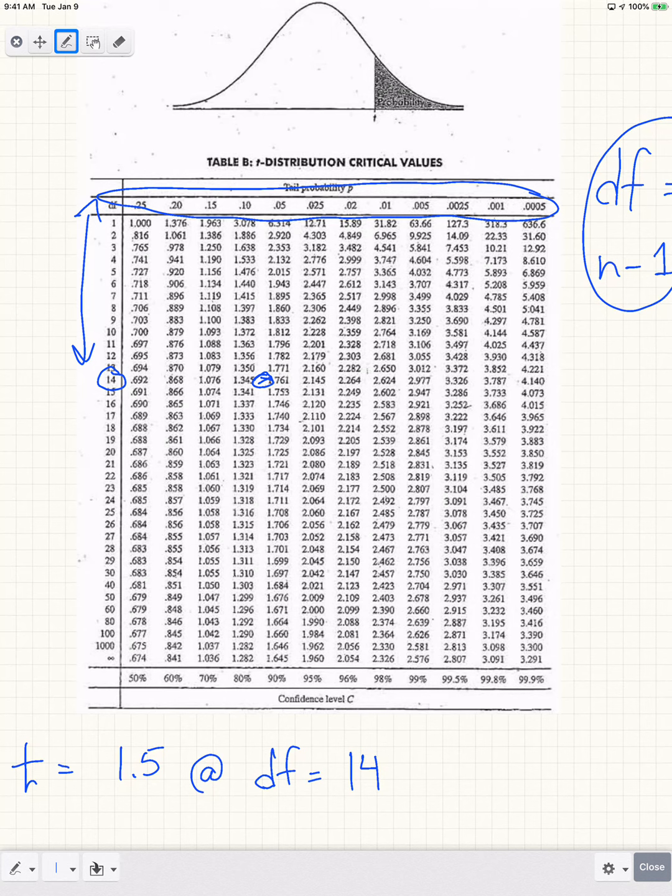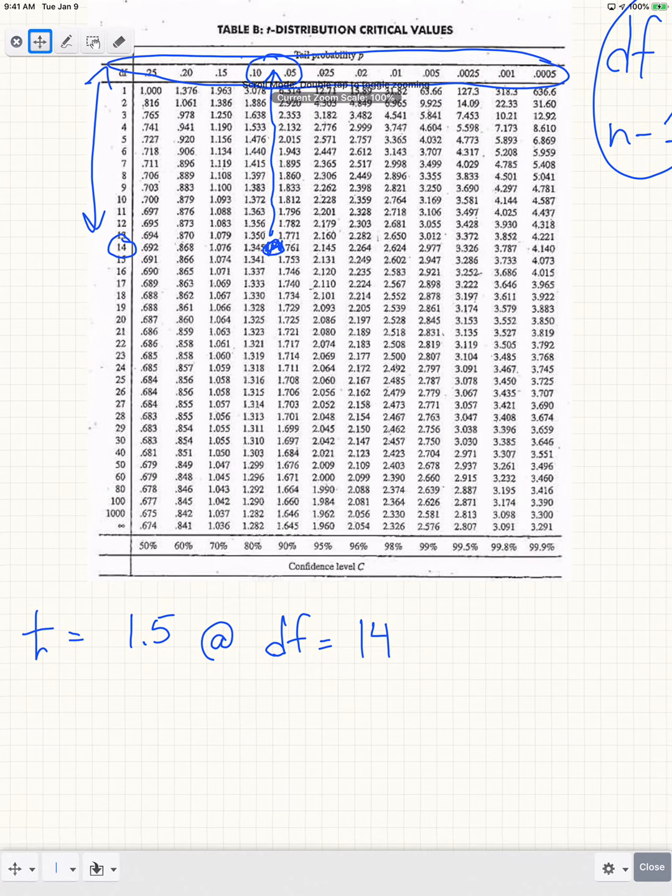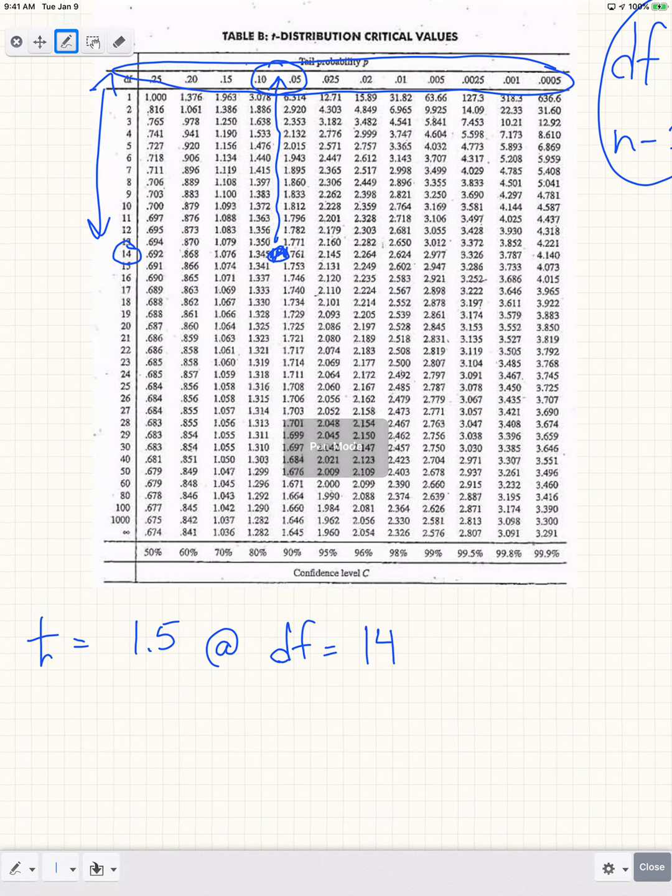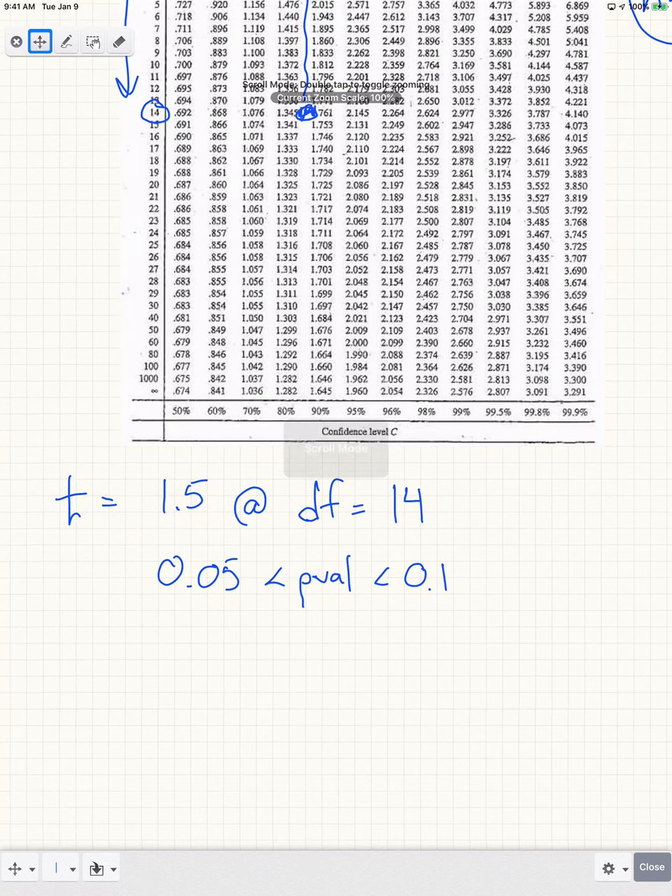So the way you analyze that, you go okay well I know that my t-test statistic is somewhere right here, so that must mean that my p-value is somewhere in between 0.05 and 0.1. So at that point what you would actually say regarding your p-value is that 0.05 is less than my p-value, which is less than 0.1.